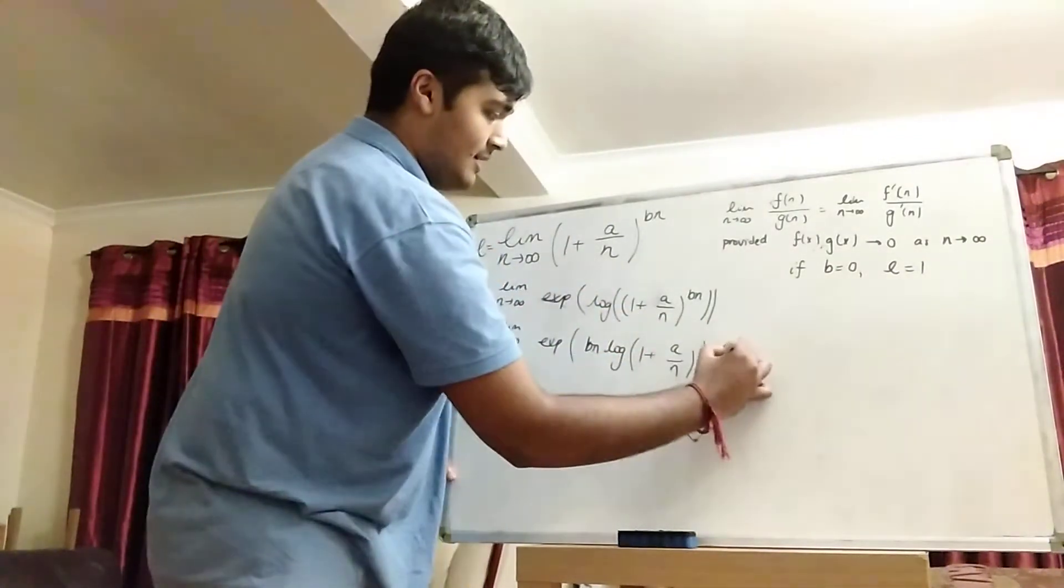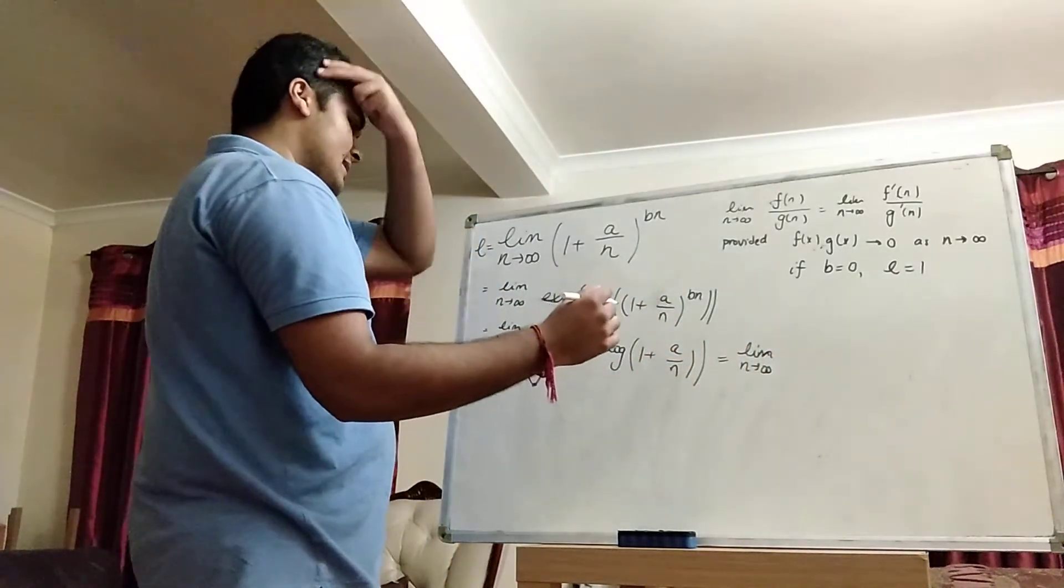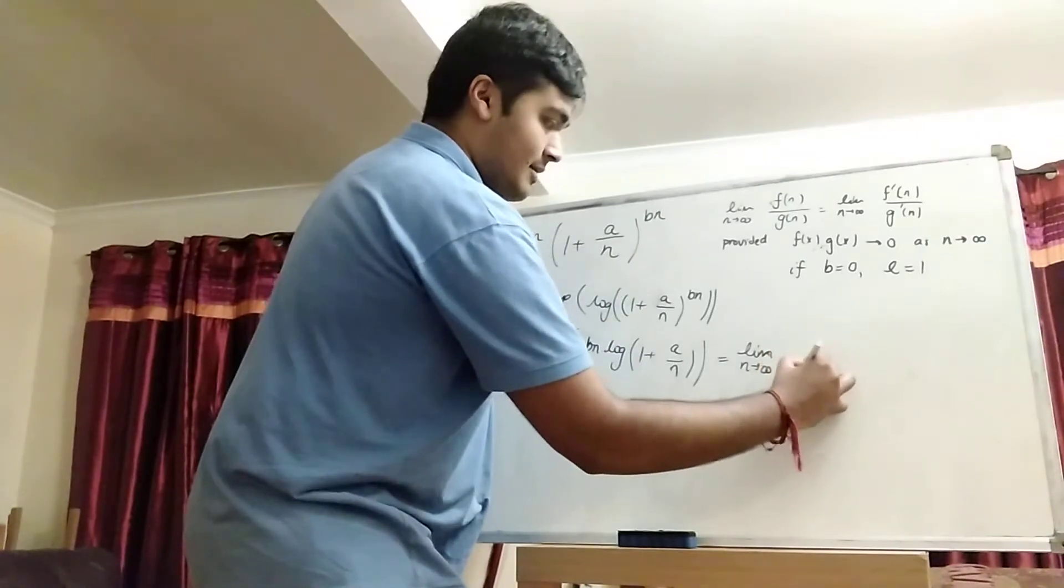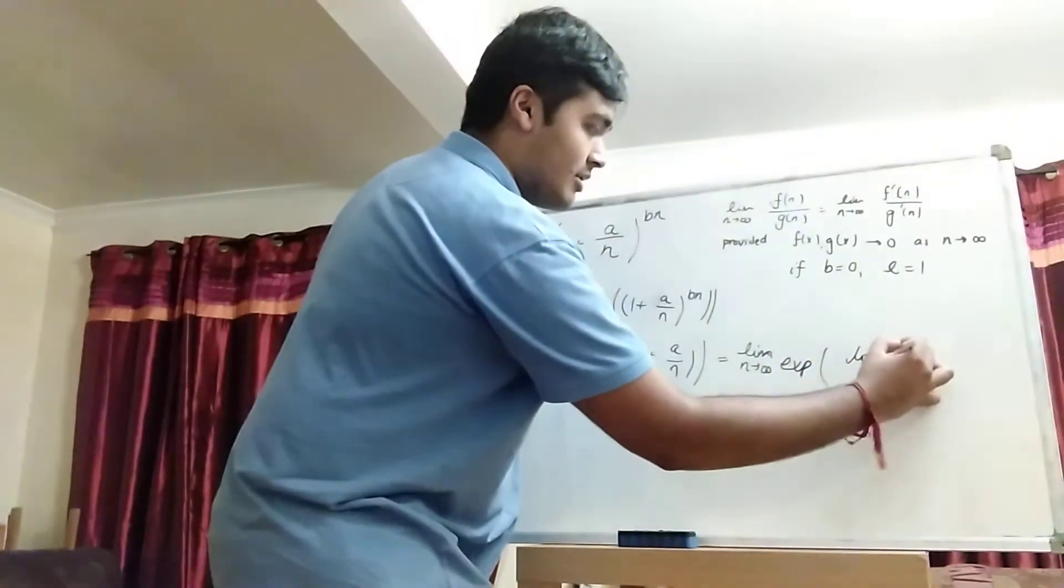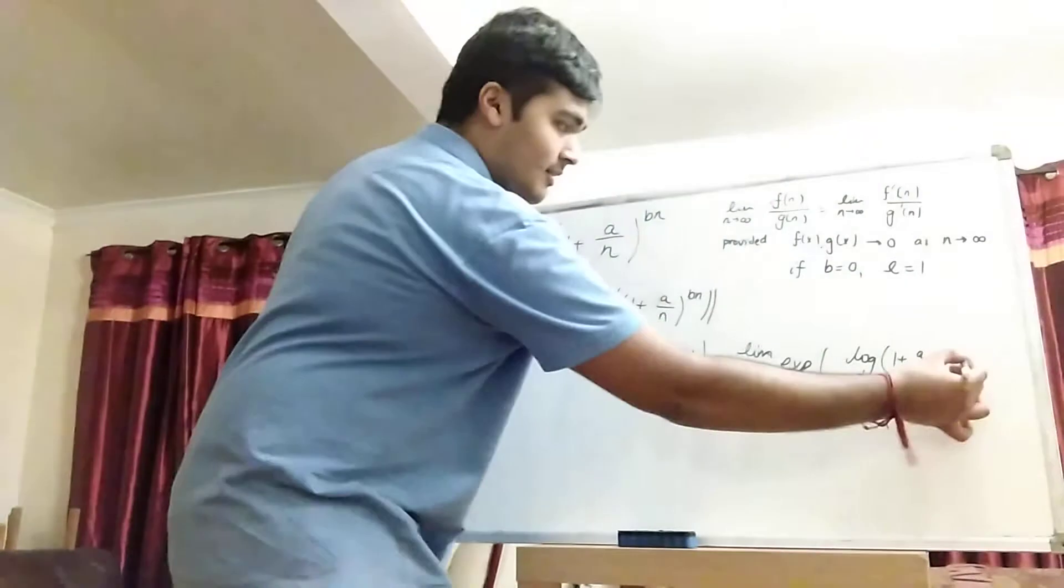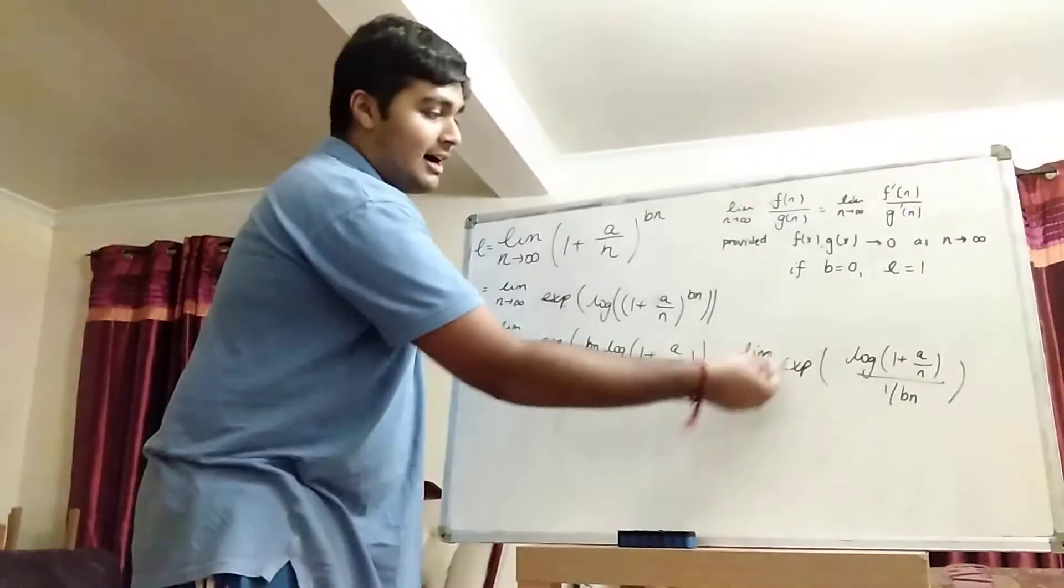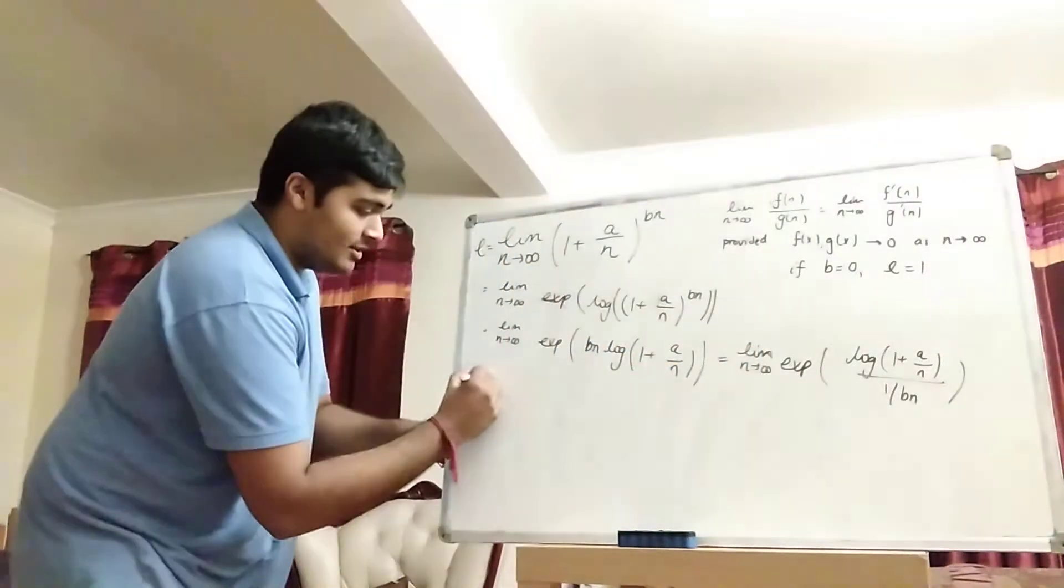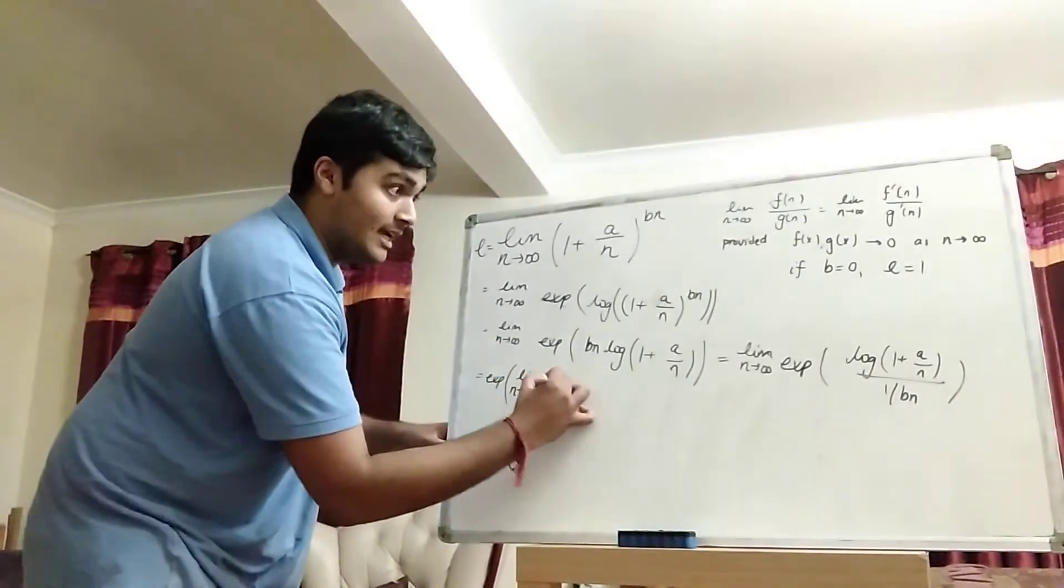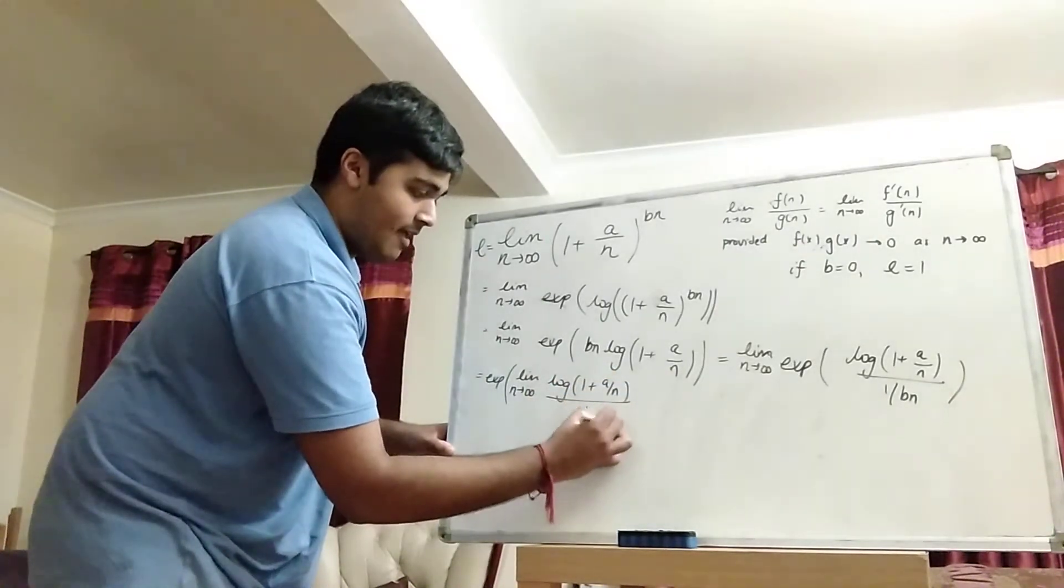Okay, cool. And now what I'm going to do is I'm going to write the thing inside the exponential slightly weirdly. But again, it's a standard trick and a way of evaluating these sorts of limits. So it's the exponential of log of 1 plus a over n divided by 1 divided by bn. Okay, cool. And now because the exponential function is a continuous function, I can bring this limit inside the exponential. So this is the exponential of the limit as n goes to infinity of log of 1 plus a over n divided by 1 divided by bn.